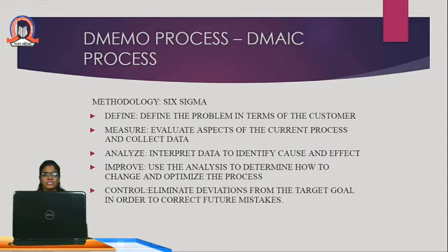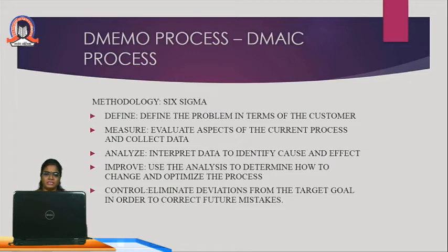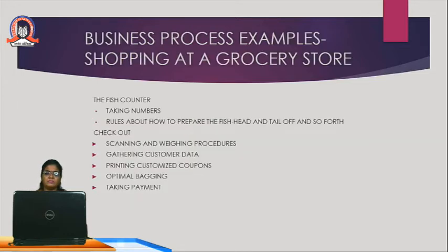Fifth, Control — eliminate deviations from the target goal in order to correct future mistakes. To get achievement and profit in the organization, we identify what deviations are occurring, remove them, improve, analyze continuously, and measure the processes going on. Then we can achieve the profit of the organization. A business process example is shopping at a grocery store — for instance, a fish counter has rules about how to prepare the fish, such as removing the head and tail.